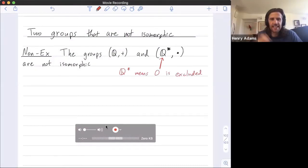And any multiplicative group, for it to be a group, you have to exclude zero because the multiplicative identity is one and then zero wouldn't have a multiplicative inverse because you can't multiply zero by anything and get one.